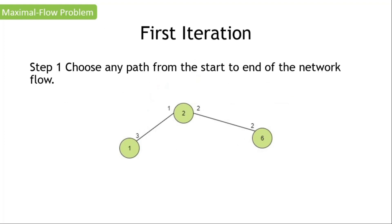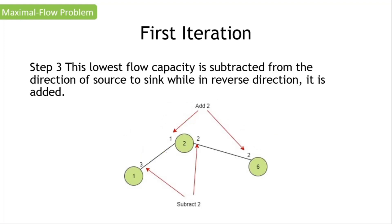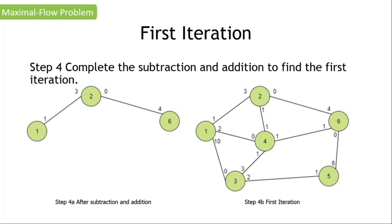Step two: find the arc with the lowest flow capacity going from source to sink. Looking at this path, we will be choosing between three and two. The lowest flow capacity is two. Step three: this lowest flow capacity of two is subtracted from the direction of source to sink, while in the reverse direction it is added. Therefore, three minus two equals one, one plus two equals three, two minus two equals zero, and two plus two equals four.